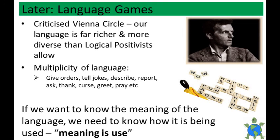In addition there are a multitude of functions for the language that we use. We can use language to give orders, describe objects, tell jokes, tell stories, ask, thank, greet, swear, pray, etc. So if we want to know the meaning of a word we need to look for how it is being used. According to later Wittgenstein, the mistake the logical positivists made was to think meaning lay only in factual significance. Both Ayer and Flew made a mistake in thinking that language which was being used in one sense — the religious sense — should be treated in the same way as when it's being used in a different sense — scientific.